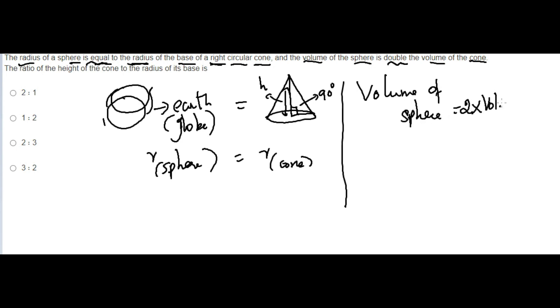You know volume of sphere is 4/3πr³, and two times the volume of cone is 2 × 1/3πr²h.